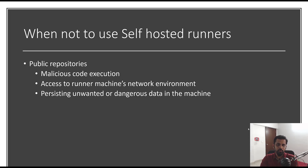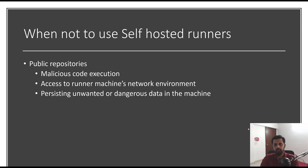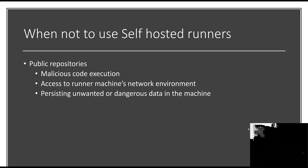When should you not use self-hosted runners? Though they bring flexibility, they come with caveats. For public repositories, it's best not to use self-hosted runners because workflows could run malicious code that can compromise the runner and access the machine's network environment. Since you're enabling communication between GitHub and your machine, malicious code could access the machine's environment and create security risks, or leave dangerous data on the machine. For public repositories, go with GitHub-hosted runners. If you have full control — such as with GitHub Enterprise or Team — you can set up self-hosted runners at the organization or individual repository level.